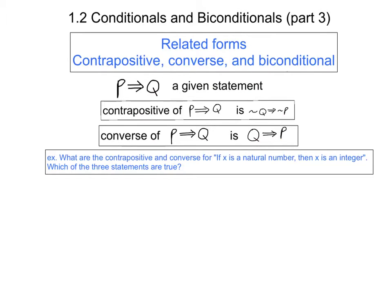Consider the statement: if x is a natural number, then x is an integer. Write down the contrapositive and the converse of this statement, and then for the resulting three statements, tell me which ones you believe are true.